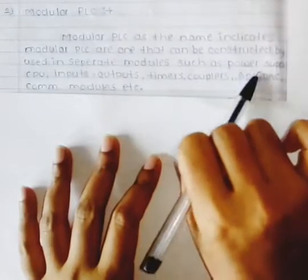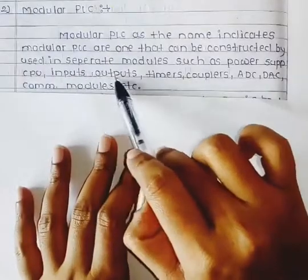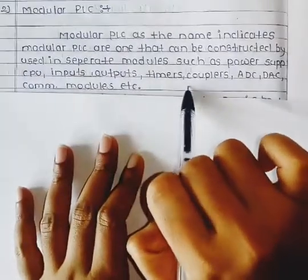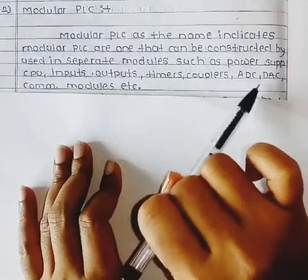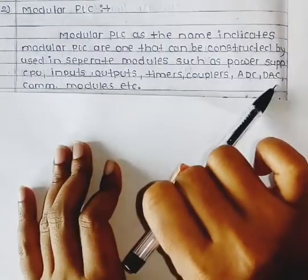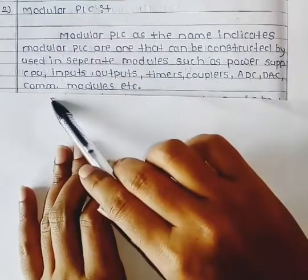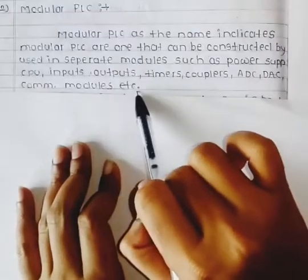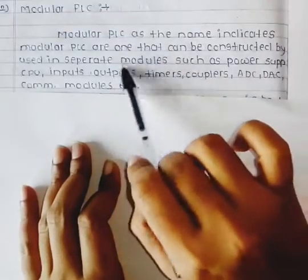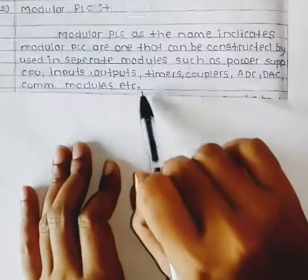Separate modules are used in construction, such as power supply, CPU, input and outputs, timers, couplers, ADC (analog to digital converter), digital to analog converter, and common modules, etc.